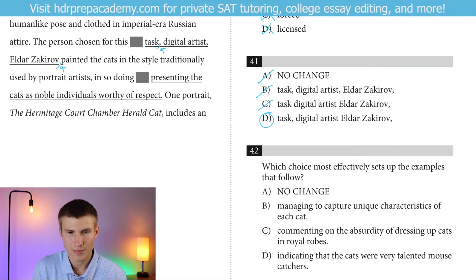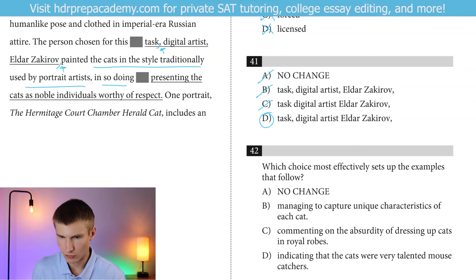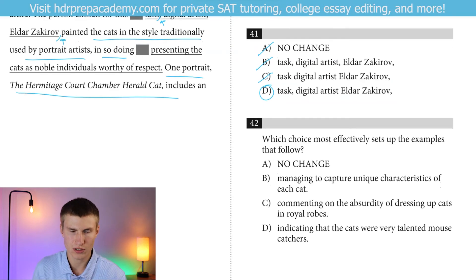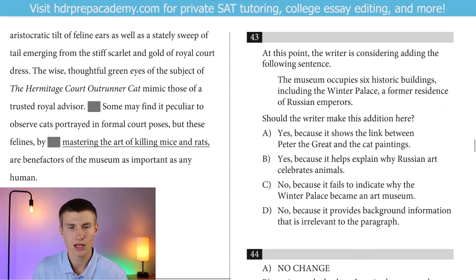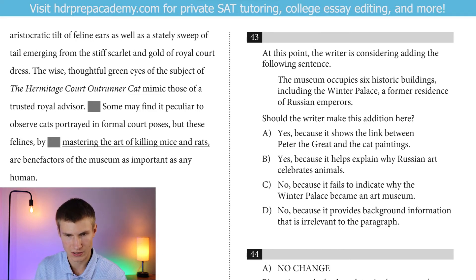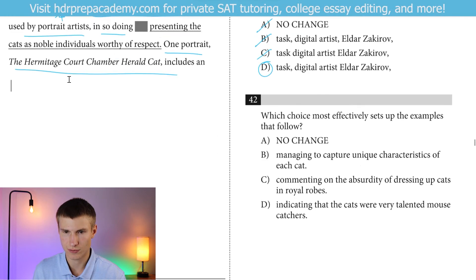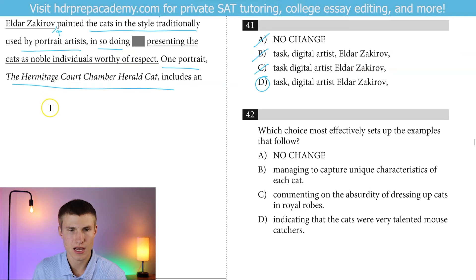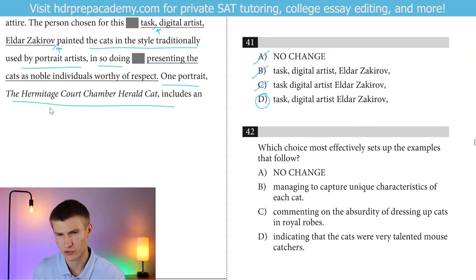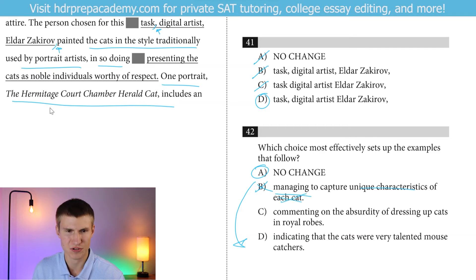For question 42: 'painted the cats in the style traditionally used by portrait artists — in so doing.' Which choice most effectively sets up examples that follow? One portrait of the Hermitage Court Chamber Herald Cat includes an aristocratic tilt of feline ears as well as a stately sweep of tail emerging from scarlet and gold of royal court dress. The wise, thoughtful green eyes of the Hermitage Court Outrunner Cat mimic those of a trusted royal advisor. We're talking about a description of these cats painted as royalty. Option A — 'presenting the cats as noble individuals worthy of respect' — yes. B — capturing each unique characteristic — no, he's painting them all as nobility. C — commenting on the absurdity of dressing cats in royal robes — no one is actually dressing cats. D — indicating the cats were very talented mouse catchers — nothing to do with that. Answer is A.